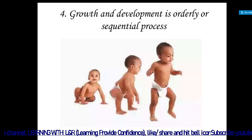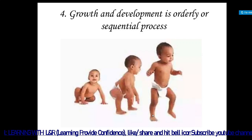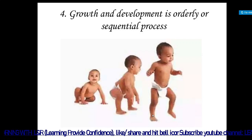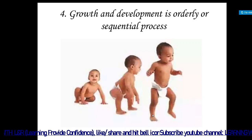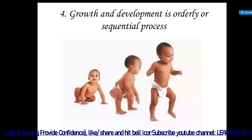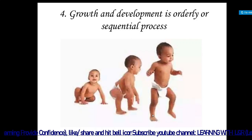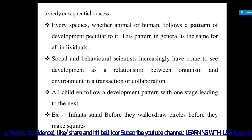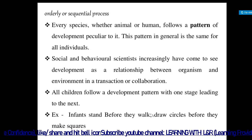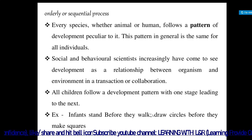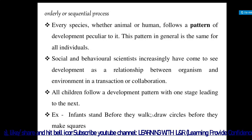Growth and development is also an orderly and sequential process. It is orderly because everyone follows the same order: neonate, infant, toddler, preschool, school age, adolescent. Not only humans — every species, whether animal or human, follows a pattern of development peculiar to it.